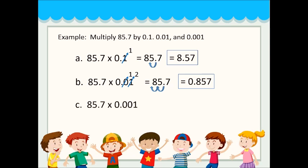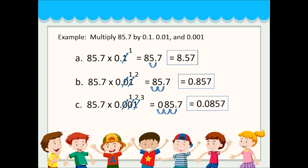Next is 85.7 times 0.001. This time we move the decimal point three places to the left — 1, 2, and 3. Since there's no number there, we add a zero. Our final answer is 0.0857.